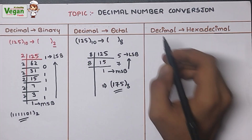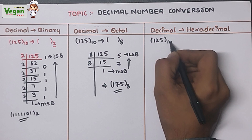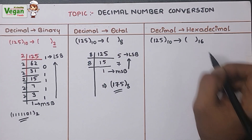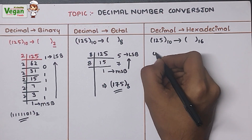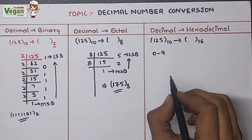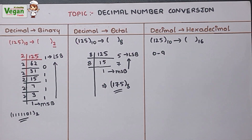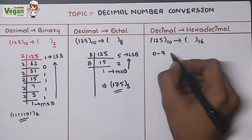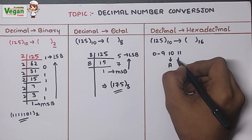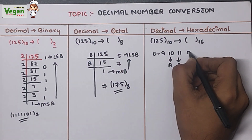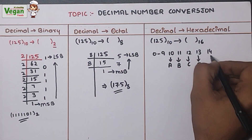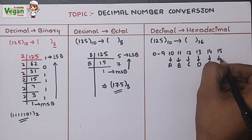Next, decimal to hexadecimal. We convert 125 to hexadecimal, which has base 16. In hexadecimal, values 0–9 are written as-is. After 9, if it is 10 we write A, 11 is B, 12 is C, 13 is D, 14 is E, and 15 is F.